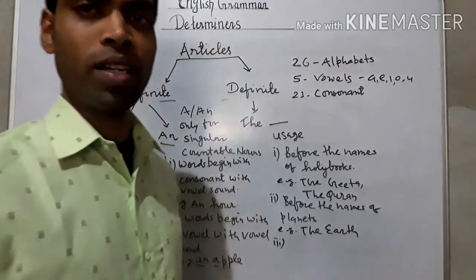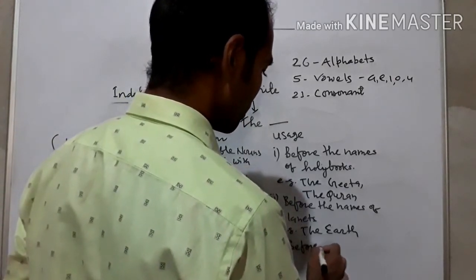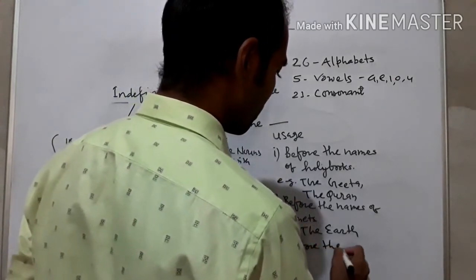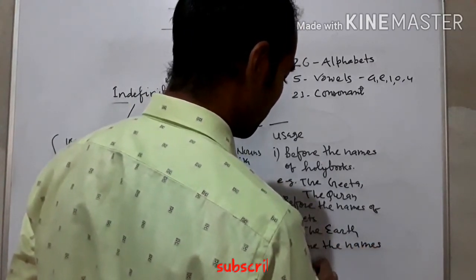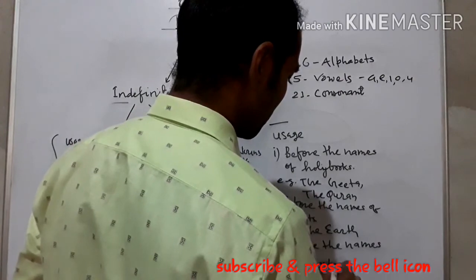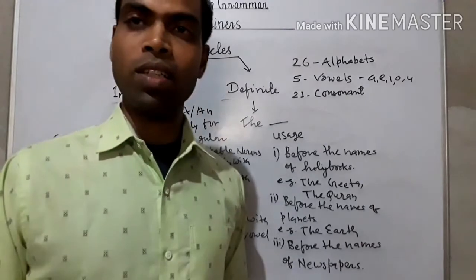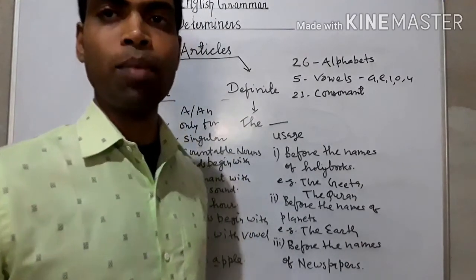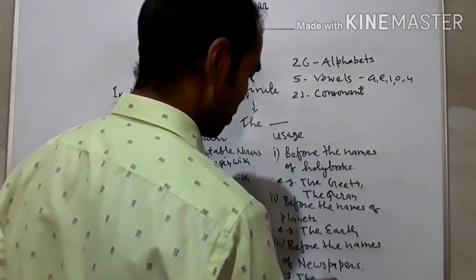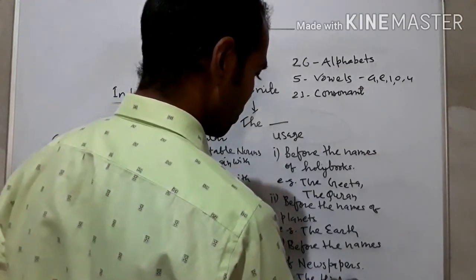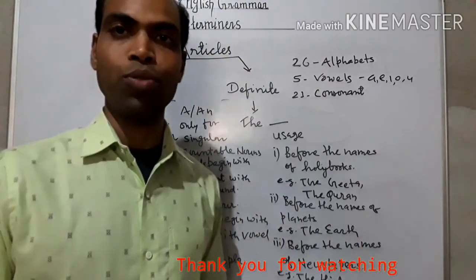After that, there are many uses. I will tell you about this in the video. First, we will see a few other uses. Before the names of newspapers, magazines, periodicals, we can use THE. For example: the Hindu. The Hindu is a newspaper name, an English newspaper. You can use THE.